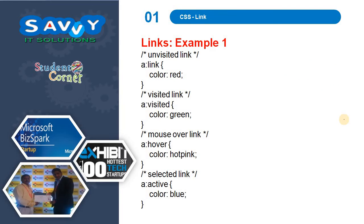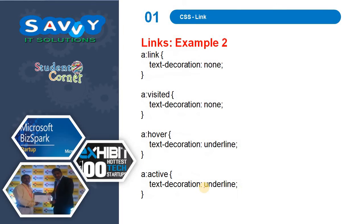Now let us go to the examples. Example one: a:link is changed to red — meaning the unvisited link is red. The visited link is changed to green. Mouse over gives hot pink — we are changing to pink color. And the active link is colored blue. So we are changing the actual default colors to custom ones in the process.